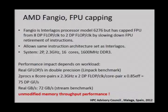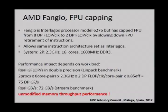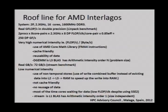This Fangio processor has FPU capping, where I go from 8 double precision flops per clock — which the 6276 is capable of — to 2 double precision flops per clock. I'm slowing down the FPU throughput of the instructions, and not touching anything else. If I look at the basic performance figures with just the FPU capping changed, for example, if I run the Linpack benchmark I will only get 75 double precision gigaflops, while before we were getting 250. So this is a way to verify empirically that I'm dropping the flops performance.